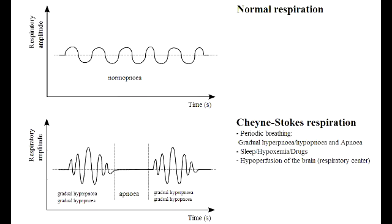What is Cheyne-Stokes Respiration? Cheyne-Stokes Respiration is an abnormal pattern of breathing characterized by progressively deeper and sometimes faster breathing, followed by a gradual decrease that results in a temporary stop in breathing. This happens in congestive heart failure or when there is an increase in intracranial pressure.